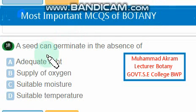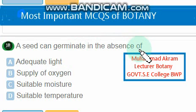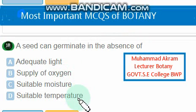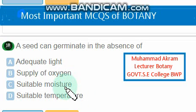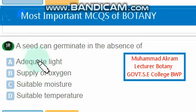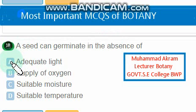A seed can germinate in the absence of which factor? Suitable temperature is necessary, suitable moisture is necessary, supply of oxygen is necessary, but a seed can germinate in the absence of adequate light — this is the right option.